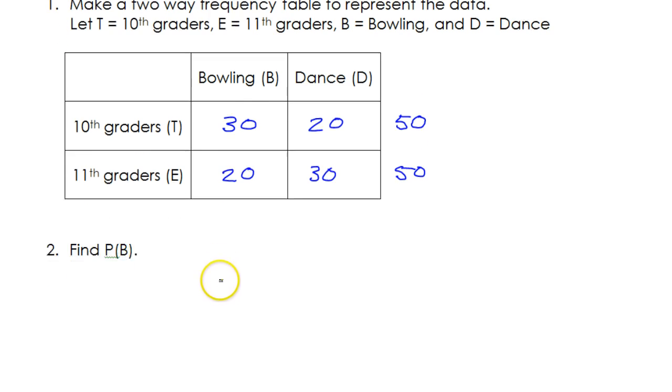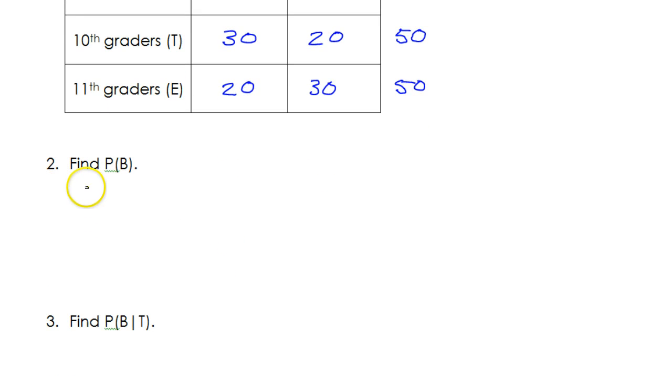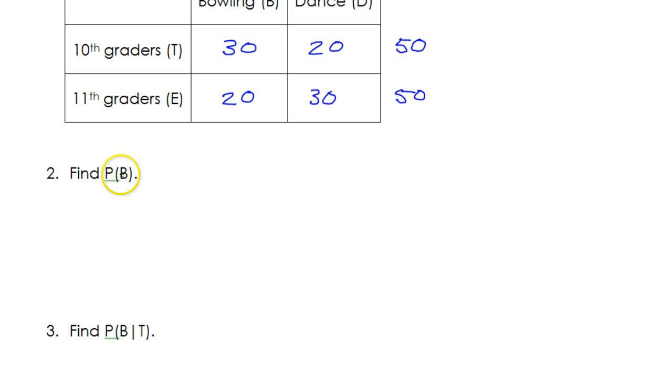So we made the frequency table. Now, for number two, let's go ahead and find the probability of B.